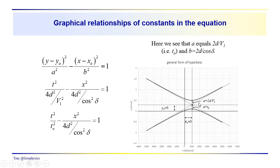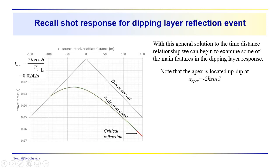To remind you of some features of the hyperbola: A equals the square root of 4d squared over v1 squared, which is just 2d over v1, and 2d over v1 is also equal to t0. So this is the distance from the origin down to the apex of the hyperbola, which occurs at t equals t0. Both y0 and x0 are equal to 0, so the hyperbola is centered at x equals y equals 0. For the dipping layer in the shot record, the event was offset in the up-dip direction — the apex distance was minus 2h sine delta, and t apex was 2h cosine delta over v1.